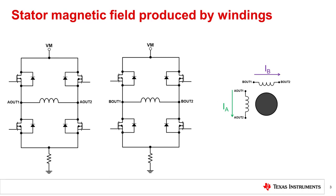The output stage of a bipolar stepper driver consists of two H-bridges, which drive current into the two motor windings. These H-bridges control the direction of the current flow and ultimately the polarity and strength of the magnetic field produced by the stator windings.